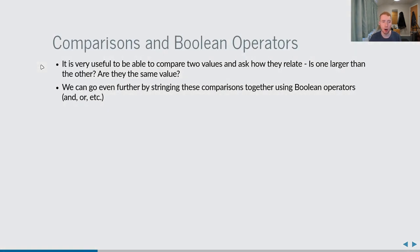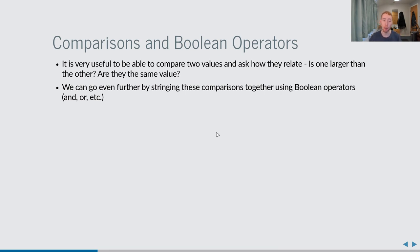Another useful topic is how to compare two values — checking if one is bigger, whether they're equal, and so on. Going further, we can combine comparisons using boolean operators to require that both comparisons are true, or that at least one is. This section covers making those comparisons and using boolean operators to combine them.